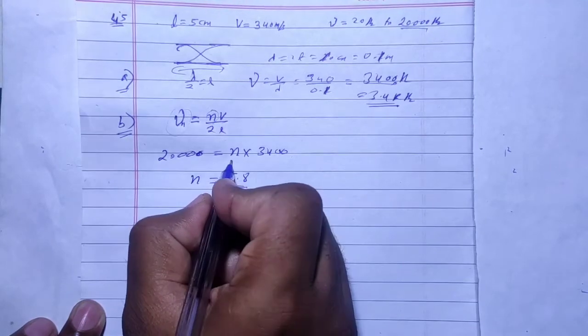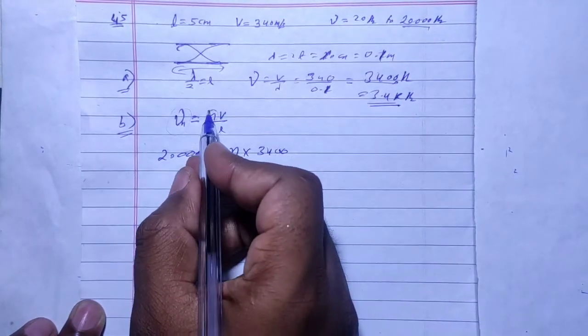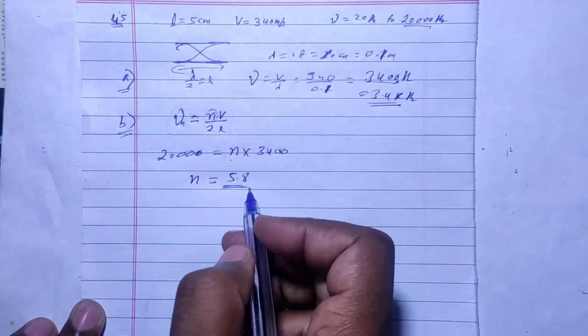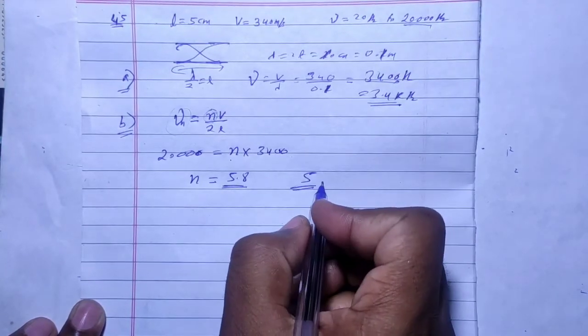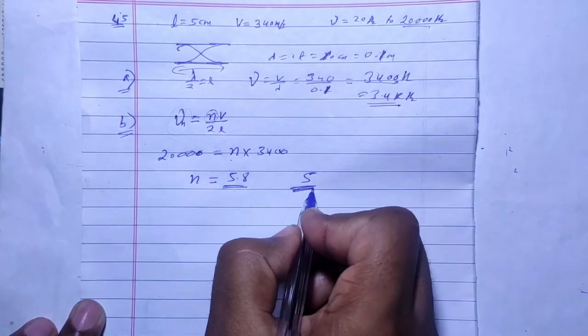Since 5.88 is not an integer and harmonics must be integral multiples, we round down to 5. Therefore, the fifth harmonic is the highest harmonic in the audible range.